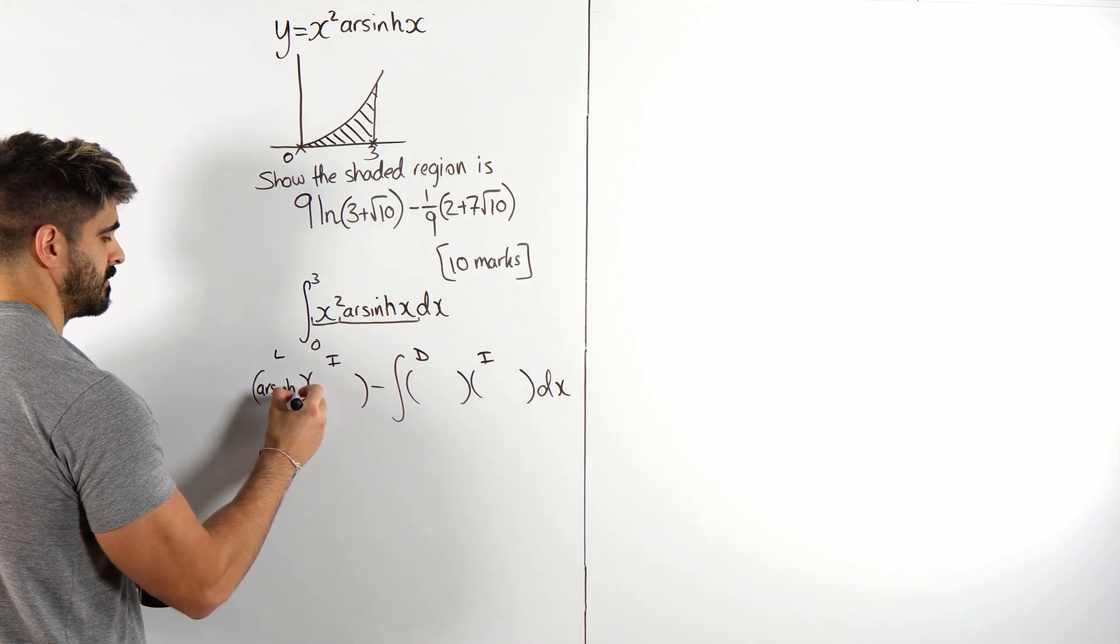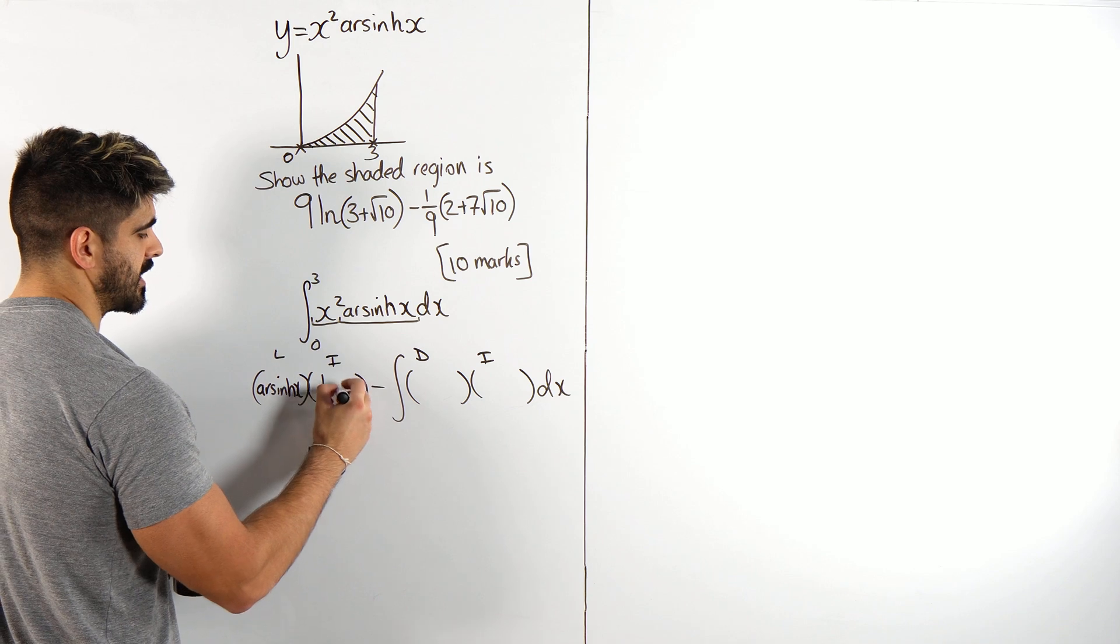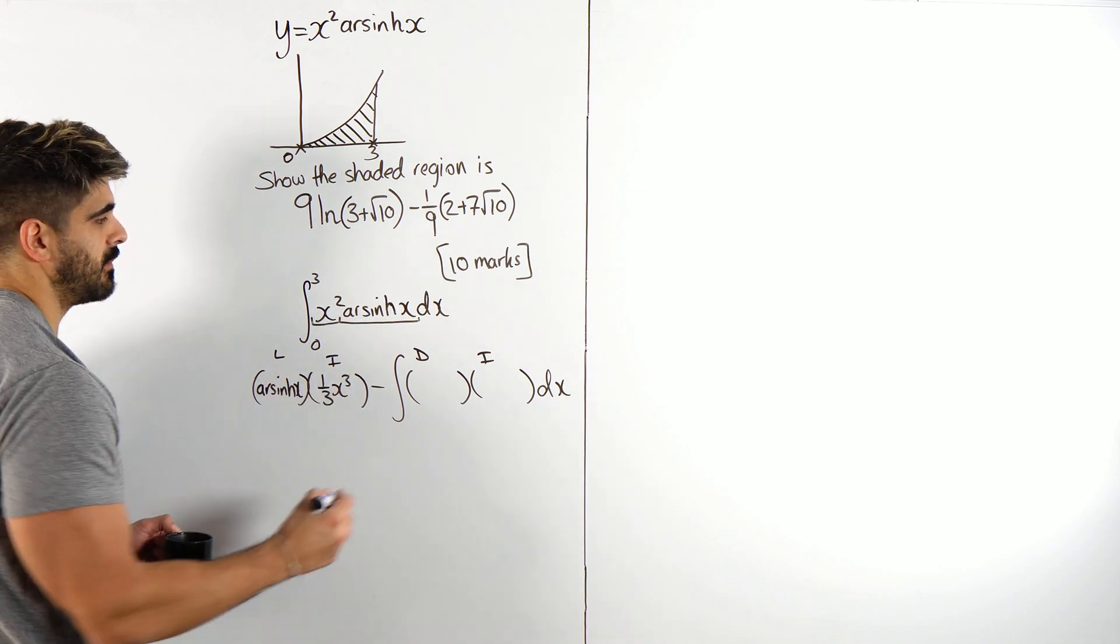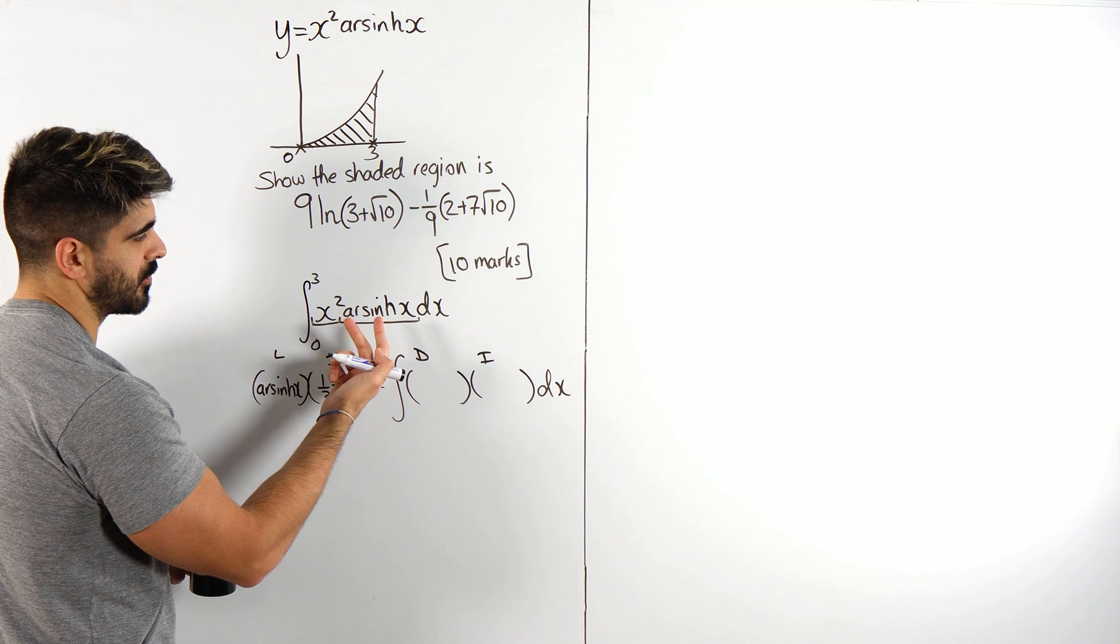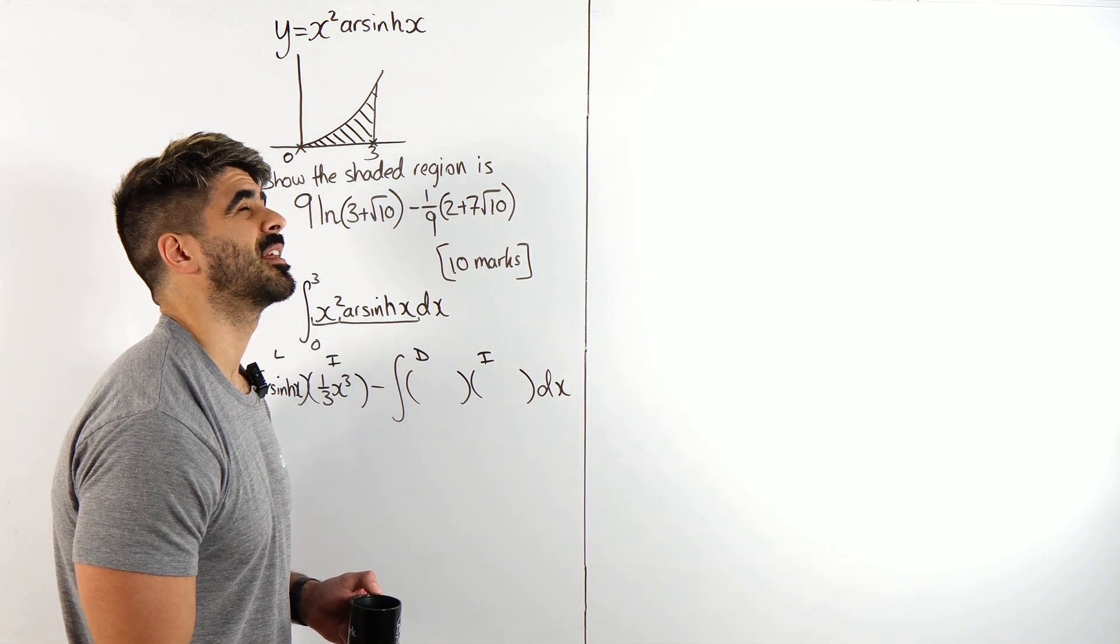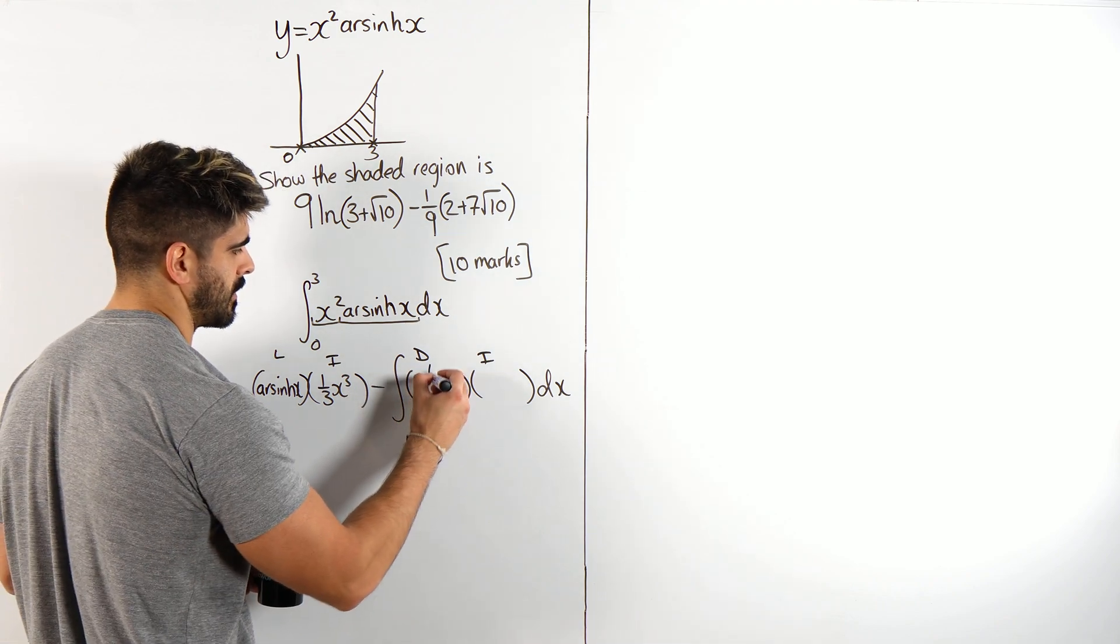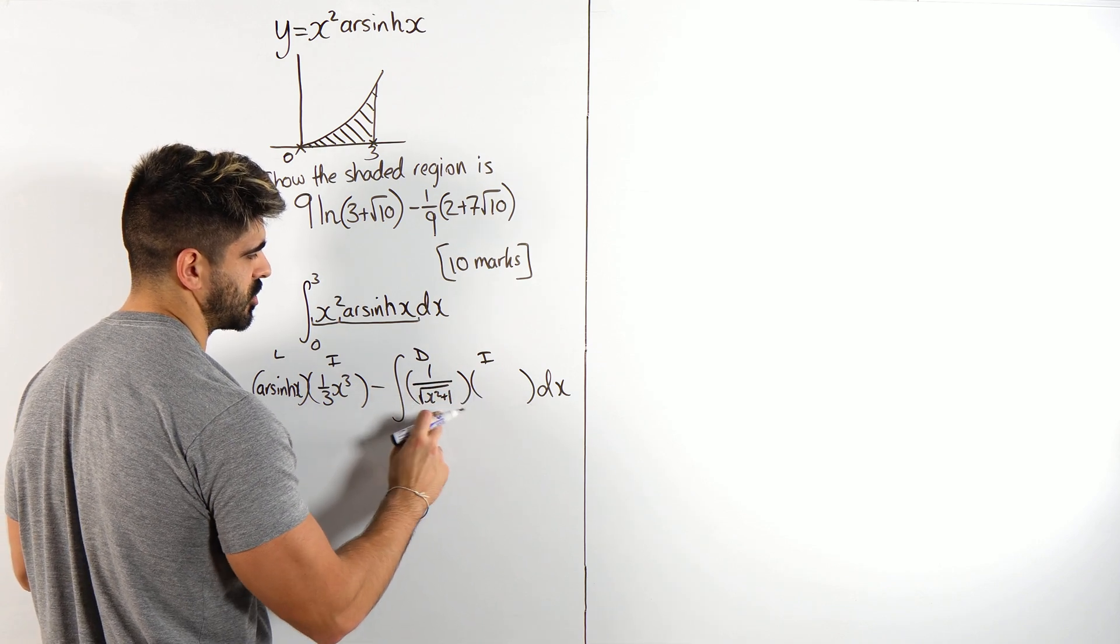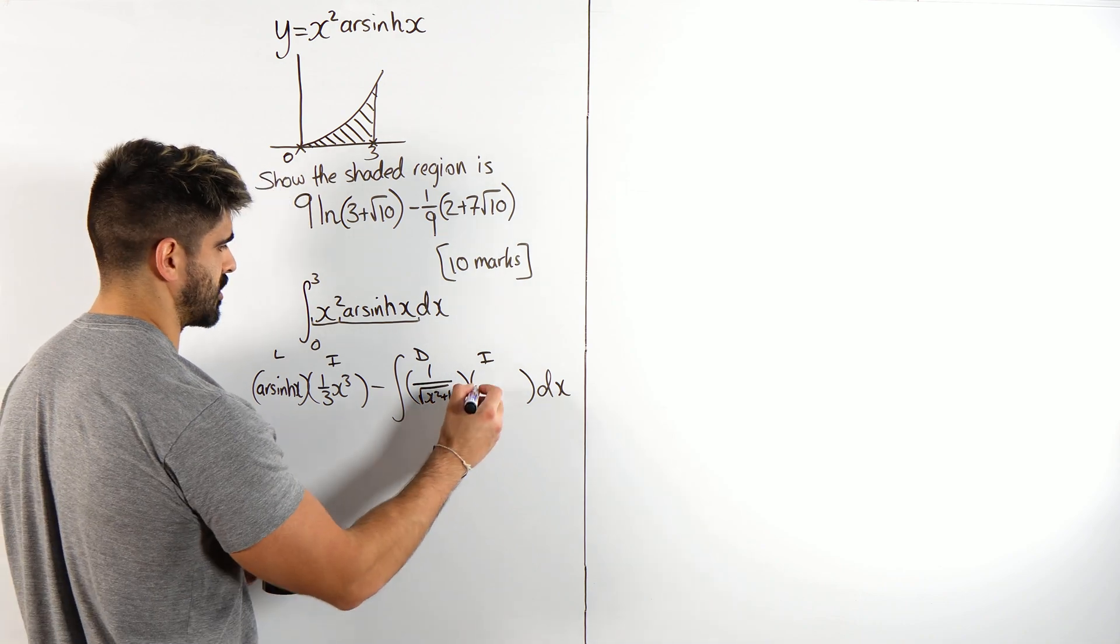So, I get arshine X. Then I integrate this instead, yeah, X squared integrates to a third X cubed, minus, differentiate this term, okay? So, remember, I've swapped them around. Now, arshine, off the top of my head, I think is 1 over root X squared plus 1. I'm pretty sure, yeah, because it comes from the Chach formula, isn't it? Cool. And then these two brackets are always the same.